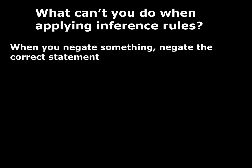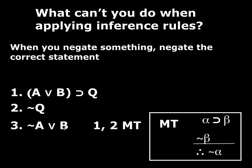Next: when you negate something, make sure you're negating the correct statement. Look at this application of modus tollens: we have a conditional, we have the negation of the consequent, so we should be able to derive the negation of the antecedent. Someone might say, the antecedent is A or B, so they just put A or B down here and slap a tilde in front. This isn't right. The thing that needs to be negated is the entire antecedent — here it's a disjunction — and only A has been negated. The disjunction itself isn't negated. So don't do that.